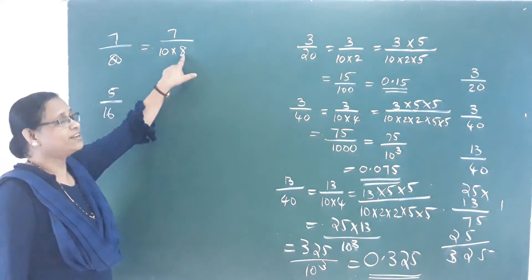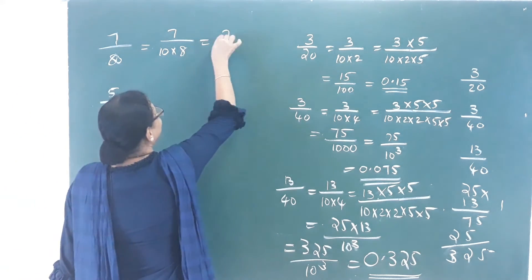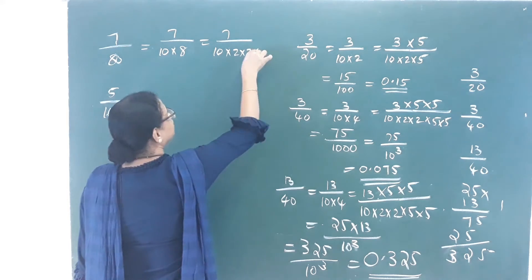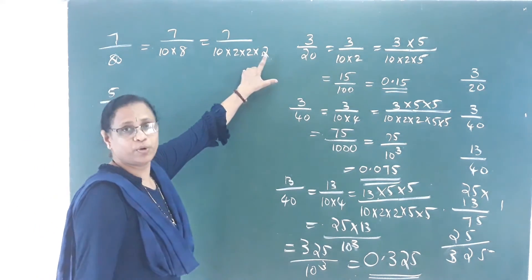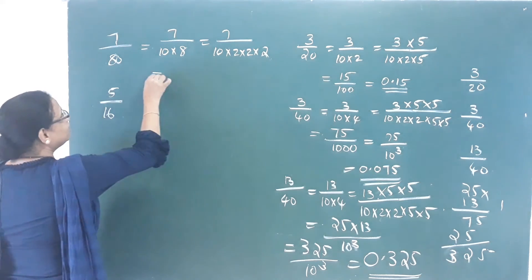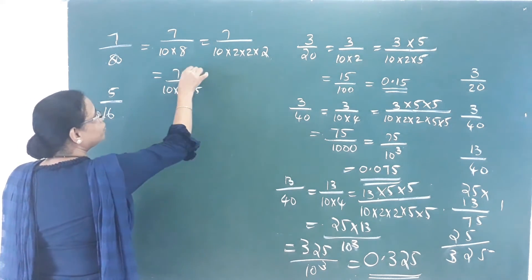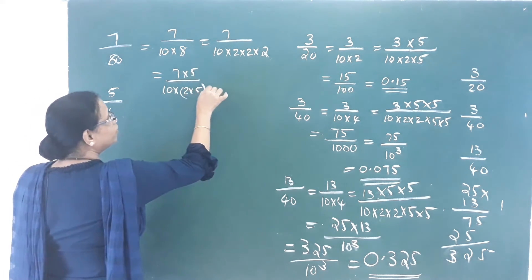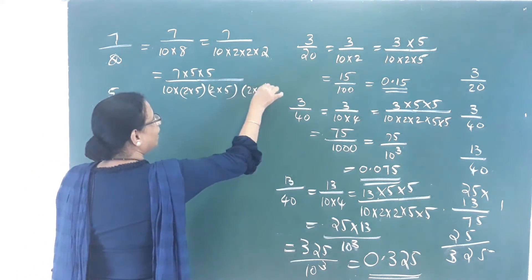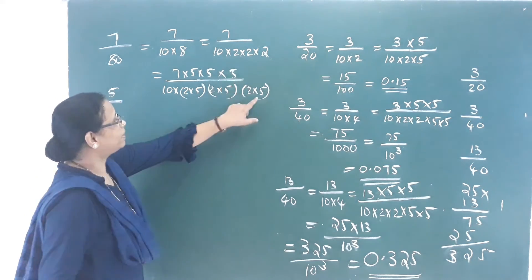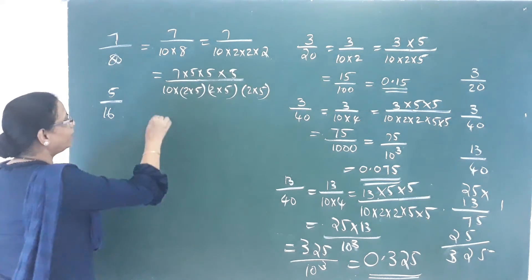How many twos are there? 8 is 2 into 2 into 2. So we have 7 by 10 into 2 into 2 into 2. If we have a 5 for each 2, then each pair gives 10. We get 3 fives and 3 twos.